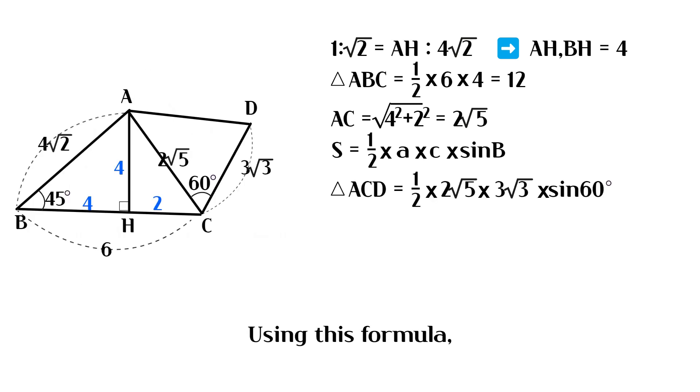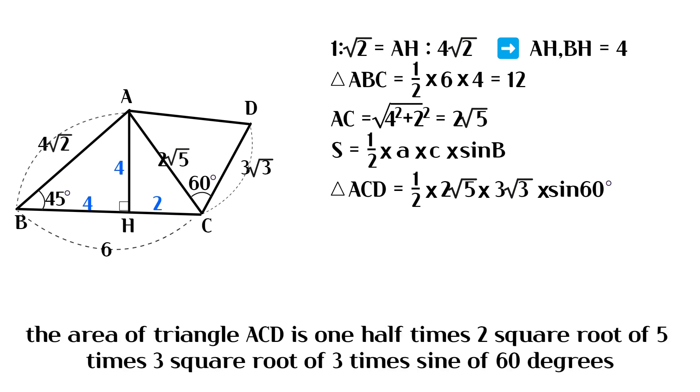Using this formula, the area of triangle ACD is 1 half times 2 square root of 5 times 3 square root of 3 times sine of 60 degrees.